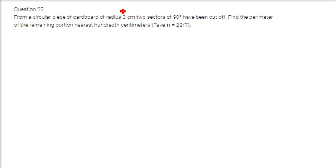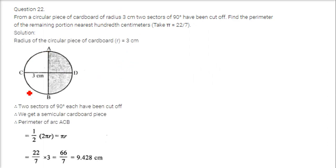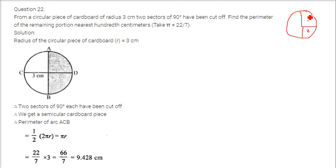From a circular piece of cardboard of radius 3 cm, two sectors of 90 degrees each are cut off — one 90-degree sector here and another 90-degree sector here. So two sectors are being cut off, meaning half of the circle is taken off and only a semicircle remains.